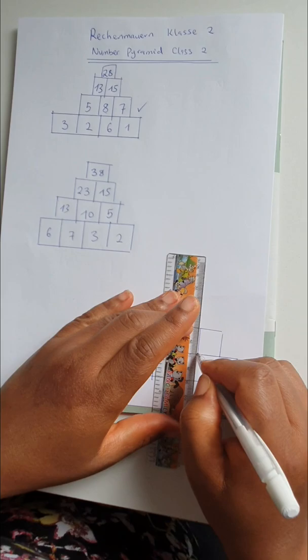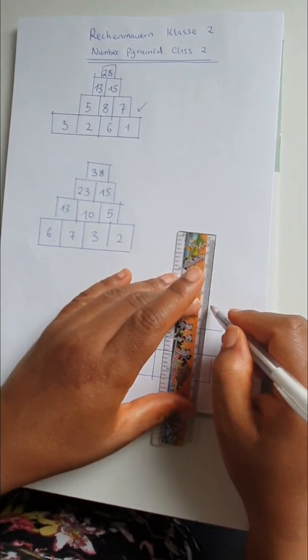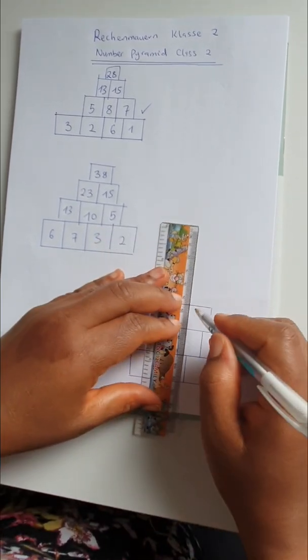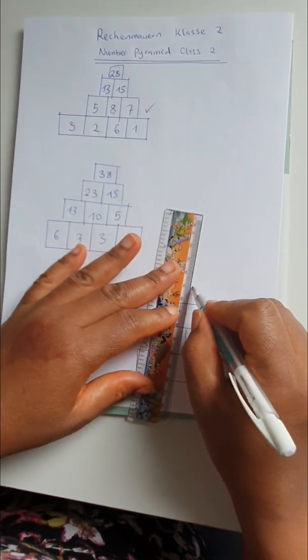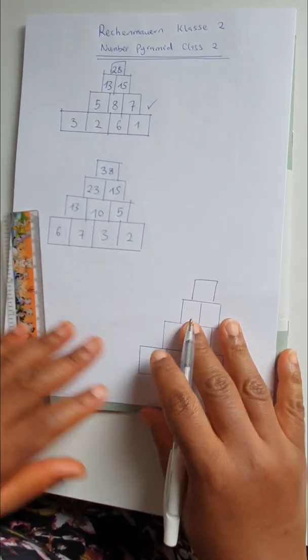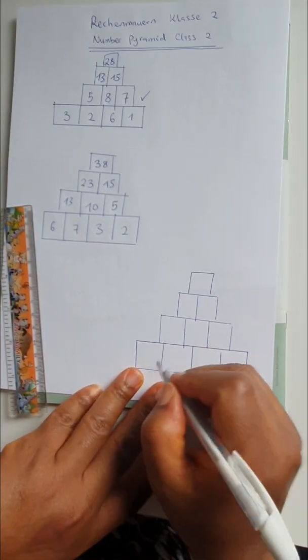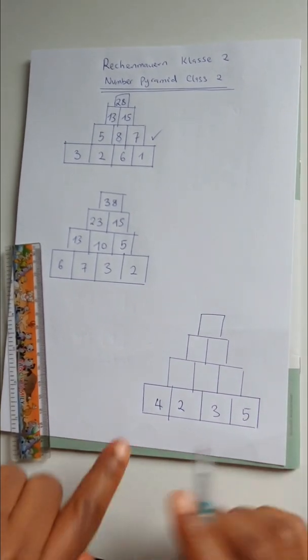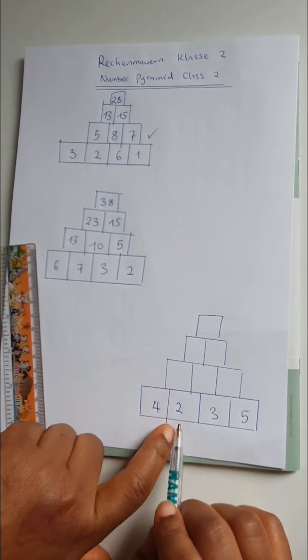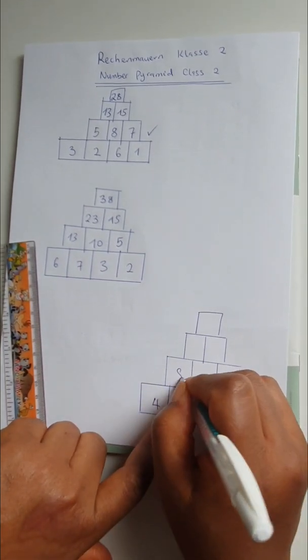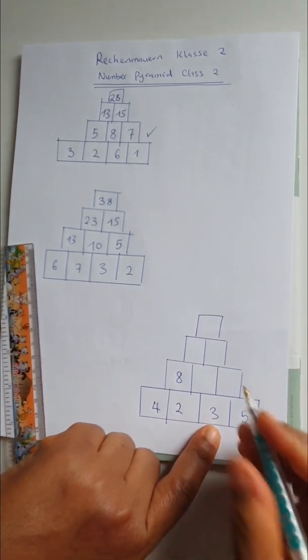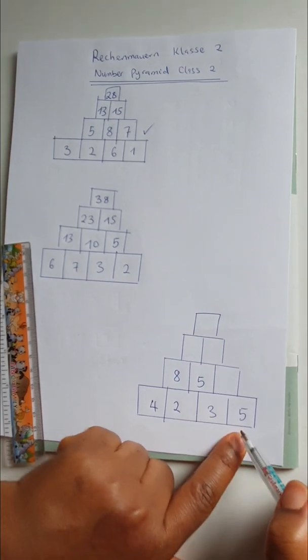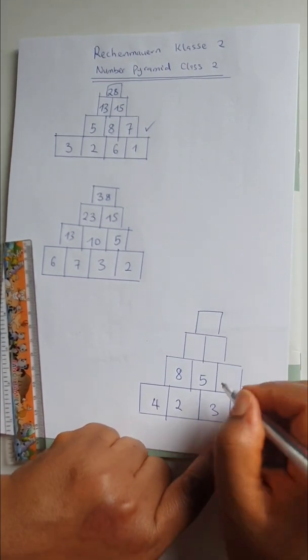One, two, three. So let's choose, let me say 4, 2, 3, and 5. 4 plus 2 is 6. 2 plus 3 is 5. 3 plus 5 is 8.